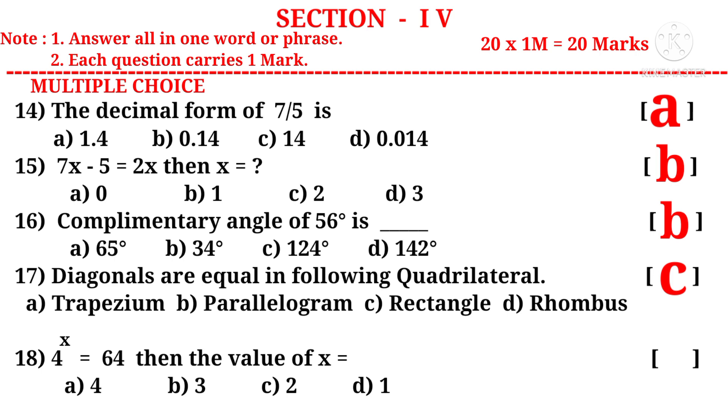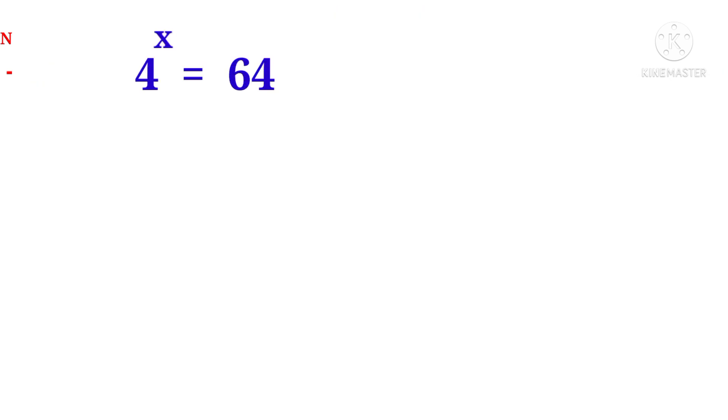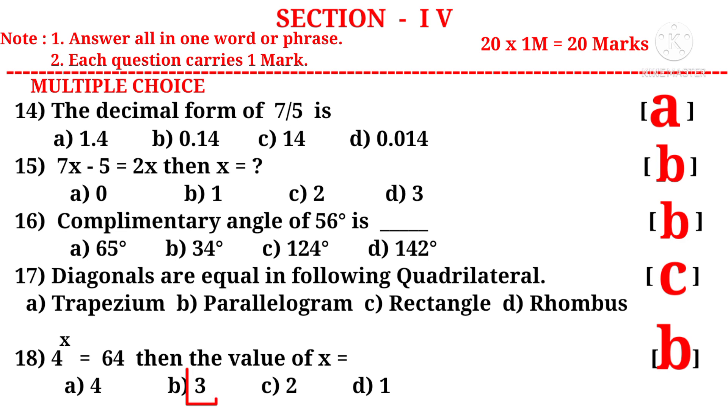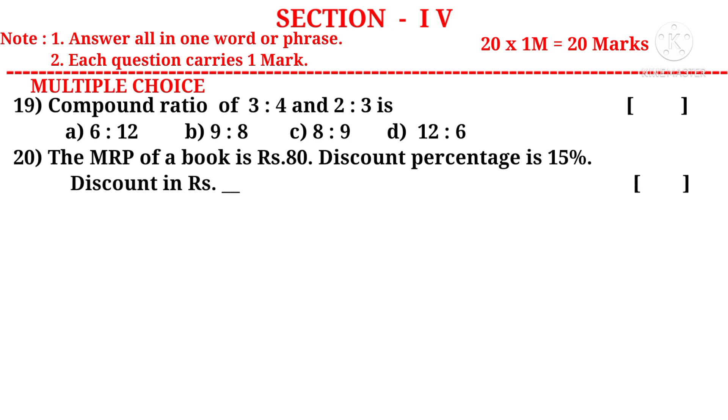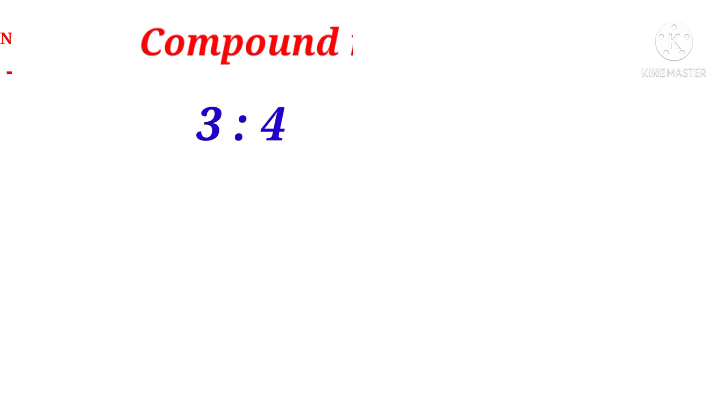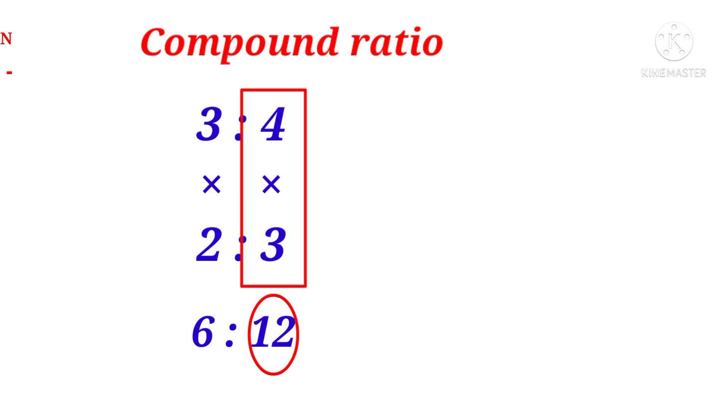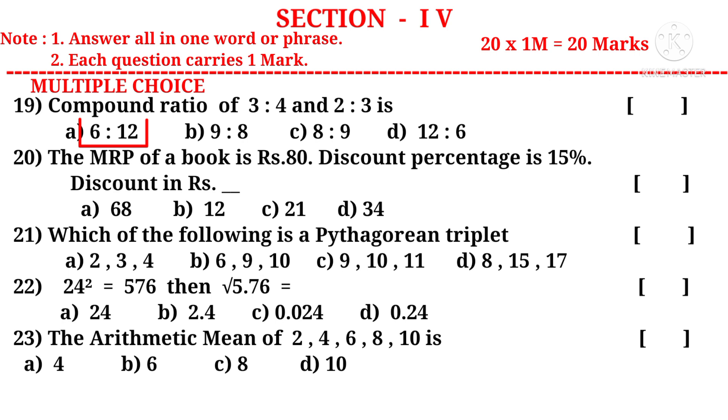Question 18: 4^x = 64, then the value of x is. 4^x = 64, then 64 can be written as 4^3. Since bases are equal, powers are also equal. So x = 3. The correct choice is B. Question 19: Compound ratio of 3 is to 4 and 2 is to 3 is. Write ratios one below the other. Now multiply. 3 into 2 is 6. 4 into 3 is 12. So compound ratio is 6 is to 12. The correct choice is A.